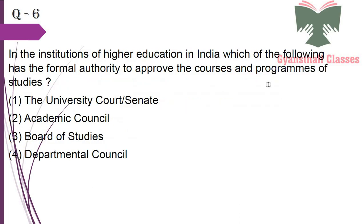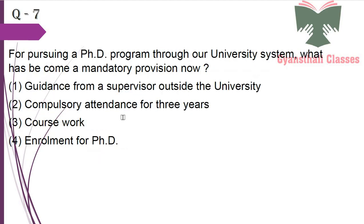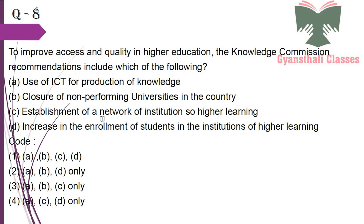Next question: In institutions of higher education in India, which of the following has the formal authority to approve the courses and programs of studies? It is done by the Academic Council. Next question: For pursuing a PhD program in our university system, what has become a mandatory provision? The mandatory provision is coursework.